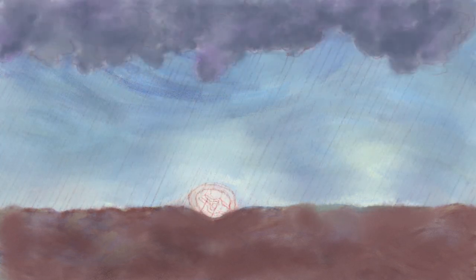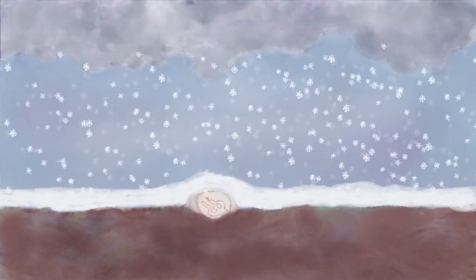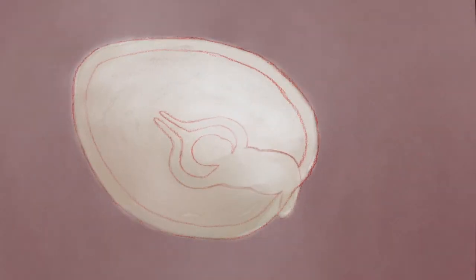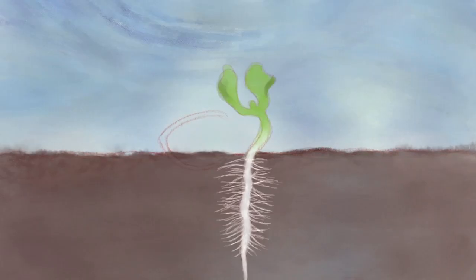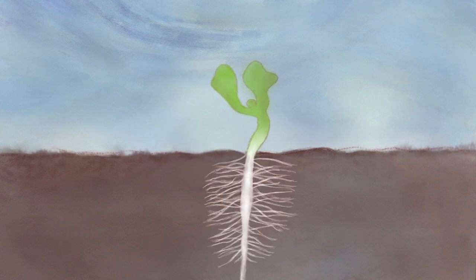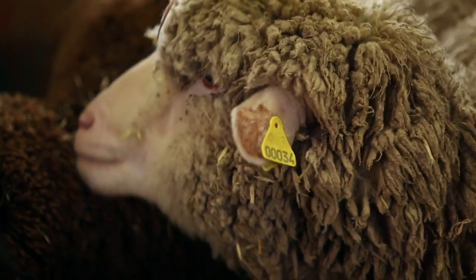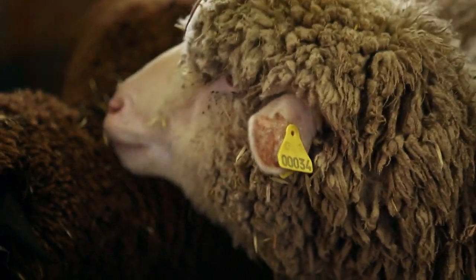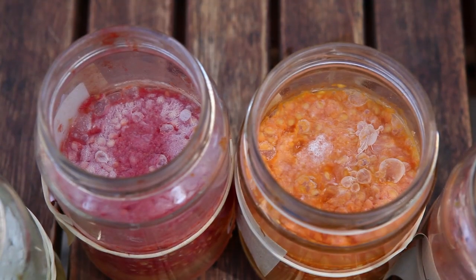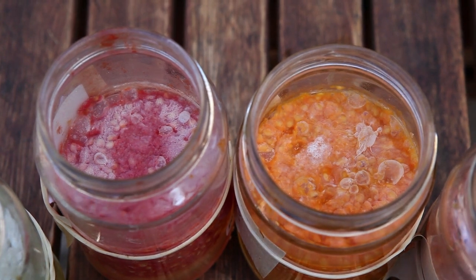Seeds will come out of this dormancy period thanks to different kinds of stimulus. Some seeds have to pass through the intestinal tract of animals, where they are activated by the animal's digestive enzymes. Others are stimulated by a fermentation process, or by a frost.